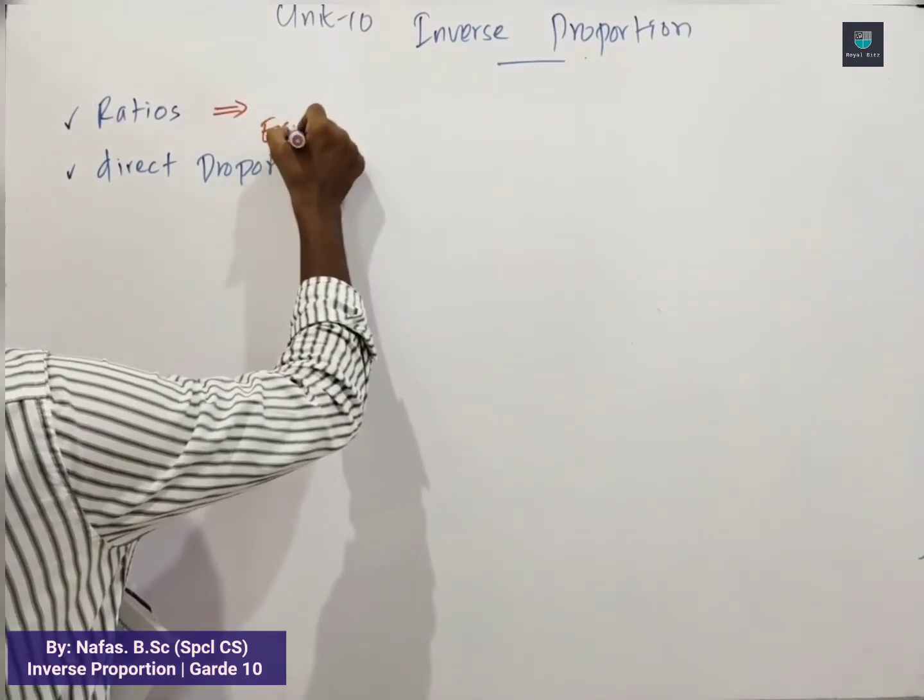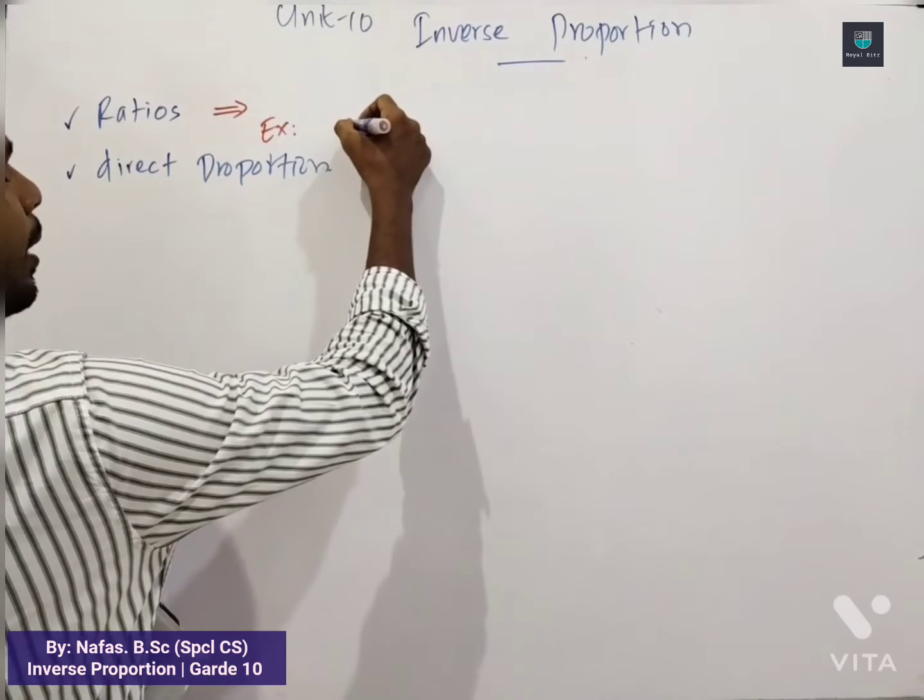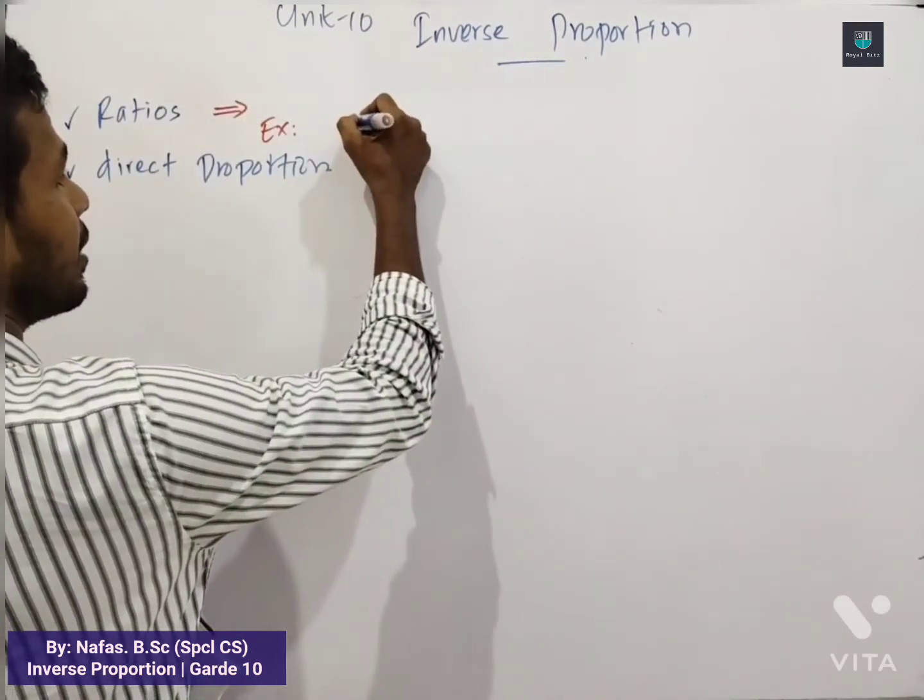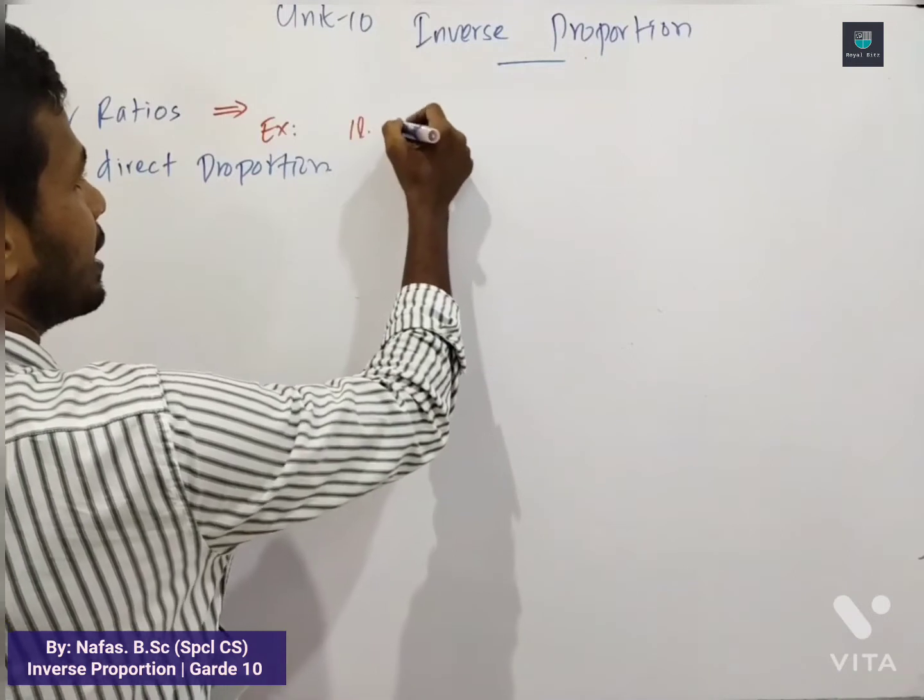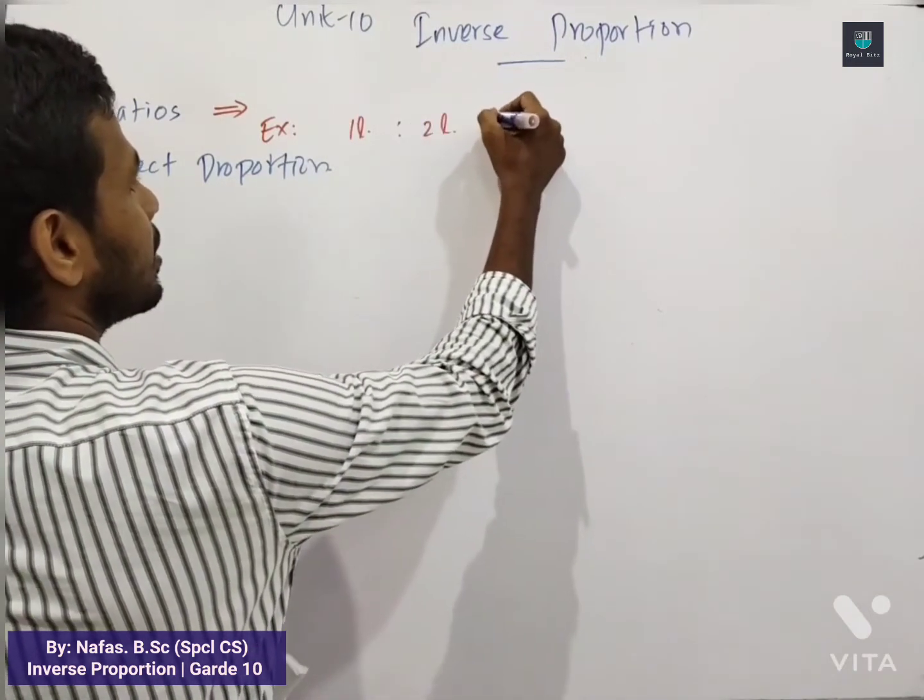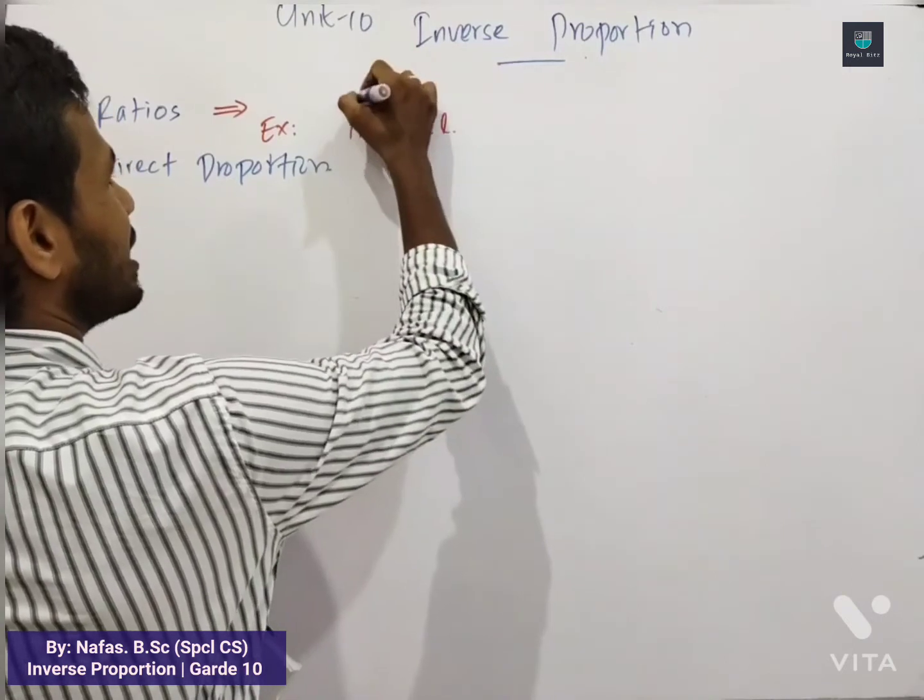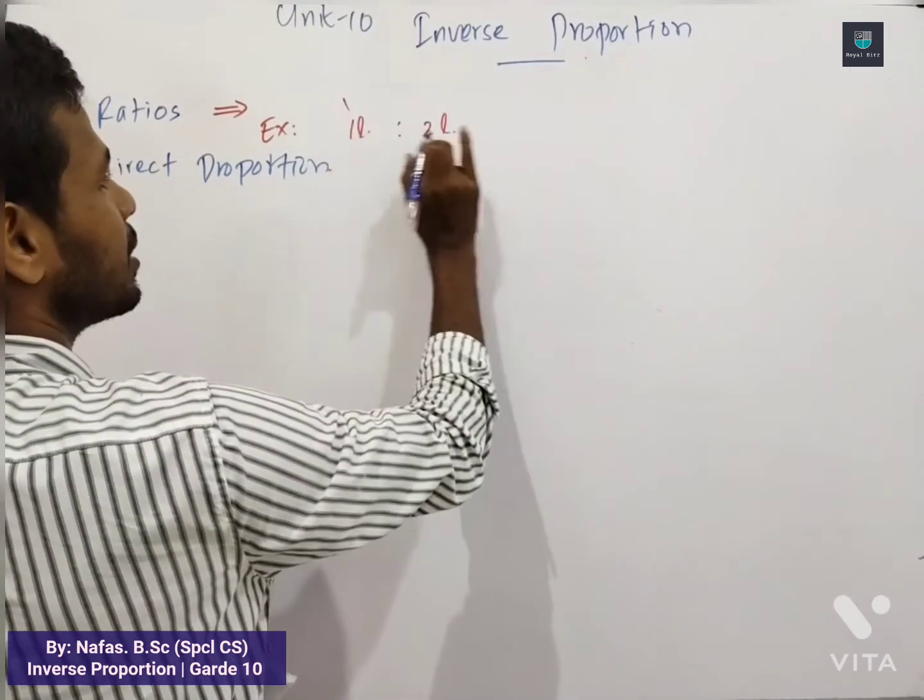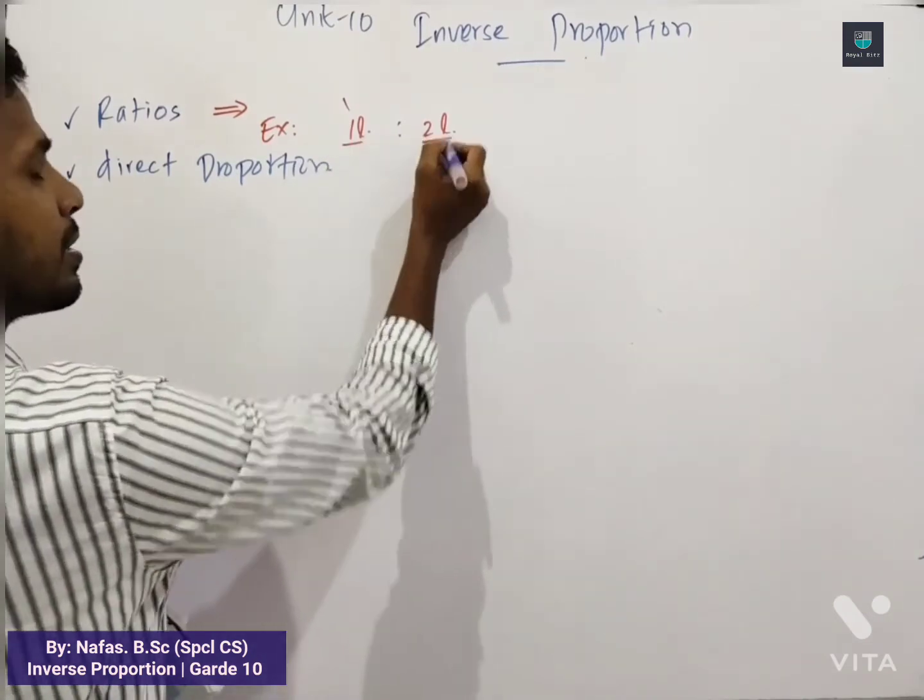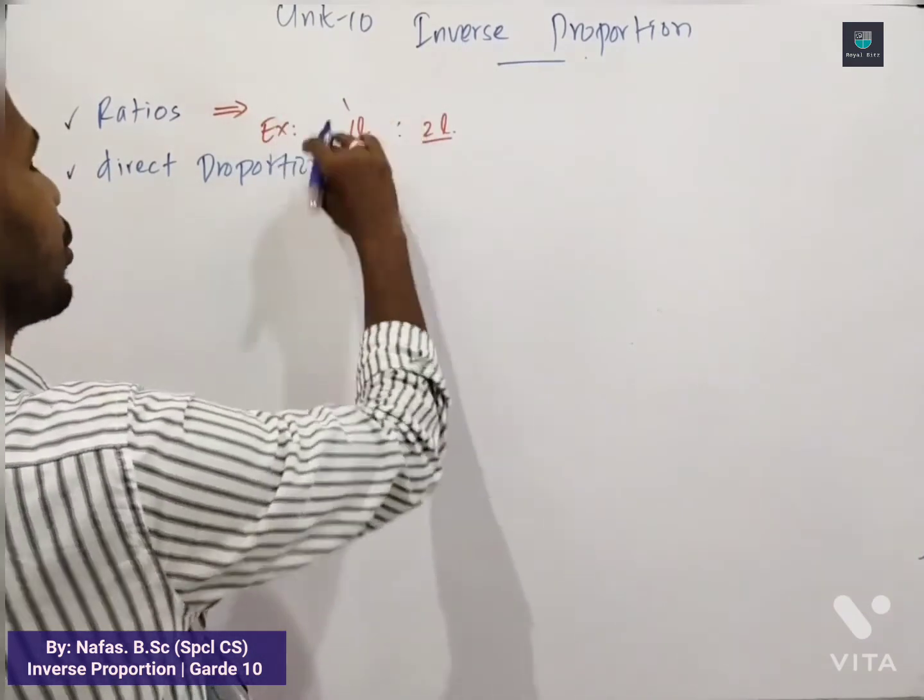For example, 1 Litre Juice Mix 2 Litre Water. So here we have same unit. So the Ratio, how do you read the Ratio?